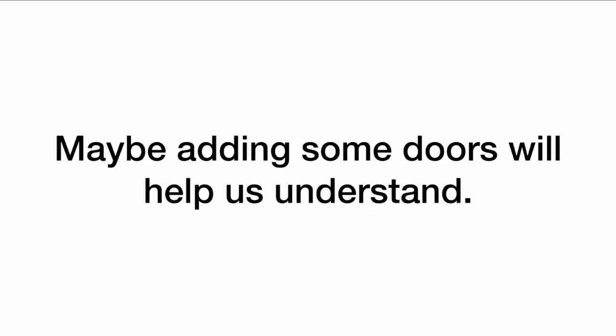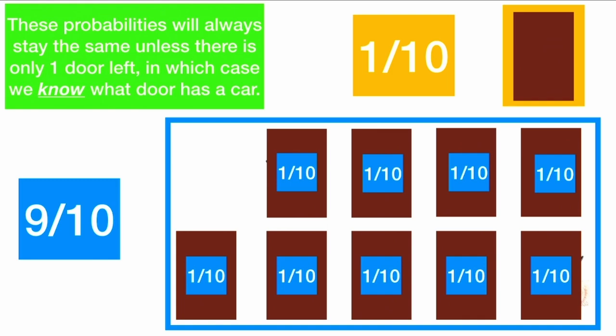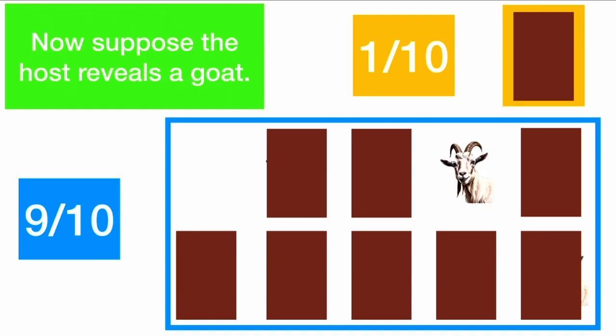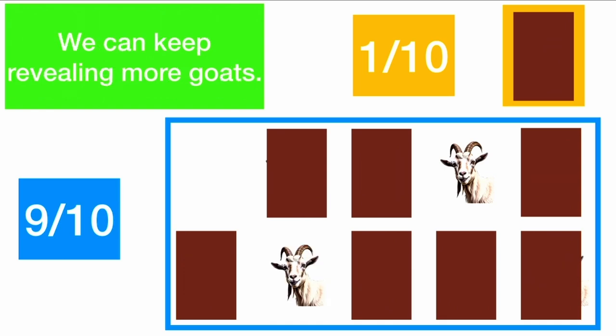Maybe adding some extra doors will help us understand this. When you pick a door, you are dividing the doors into two groups: the one you picked and the remaining doors. Your original door has a one out of ten chance of winning if there are ten doors, and the other doors have a nine out of ten chance of containing the car. These probabilities — one-tenth and nine-tenths — will always stay the same until there is only one door left. So let's say the host reveals a goat. Those remaining eight doors still have a nine out of ten probability. And because all of those doors are equal, they each have a nine out of eighty probability, as the nine-tenths probability is evenly divided between the eight doors.